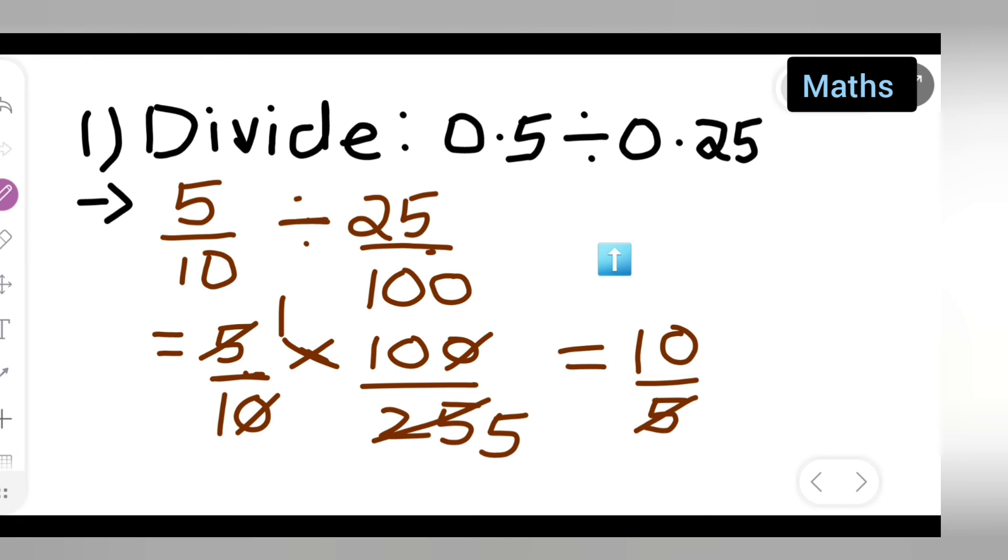Then you can cancel this. 5 ones are 5, 5 twos are 10. So your answer is 2.